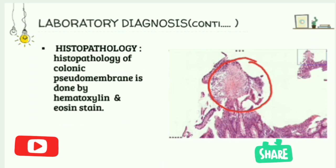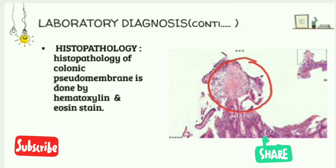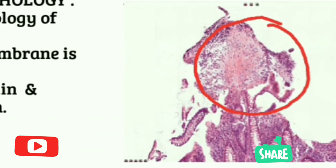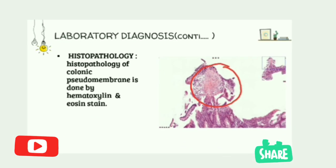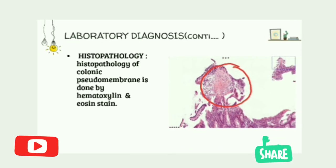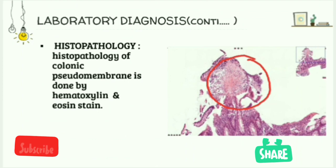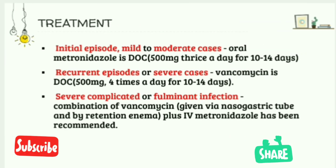Microscopically, the pseudomembrane lesions are visualized as volcano or mushroom lesions composed of pus, mucin, and fibrin that appear to erupt out of colonic glands. The mucosa underlying these areas often shows ischemic-like damage, including crypt withering, mucosal necrosis, and inflammation. In the diagram, these appear like fire erupting from volcanoes.